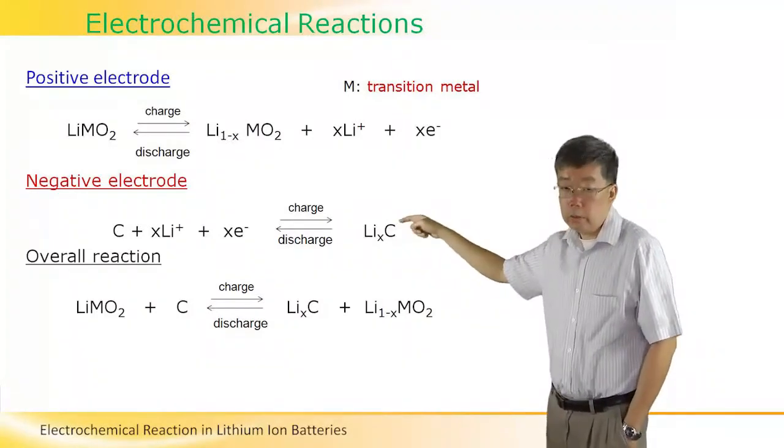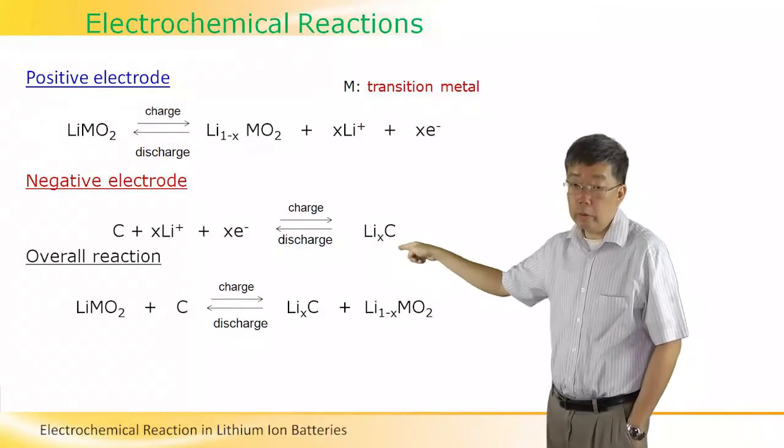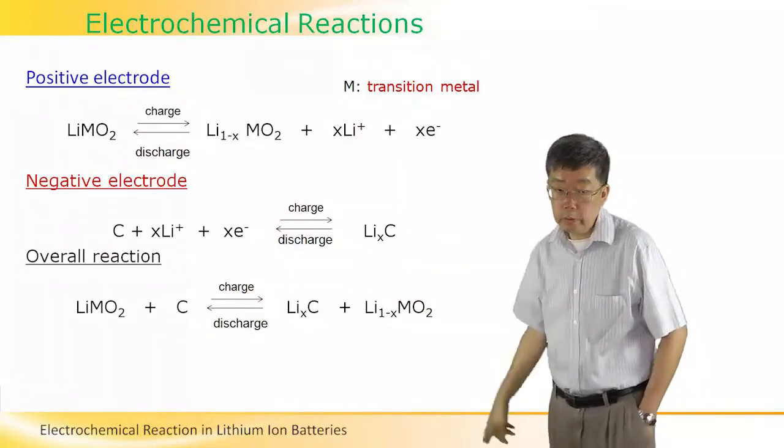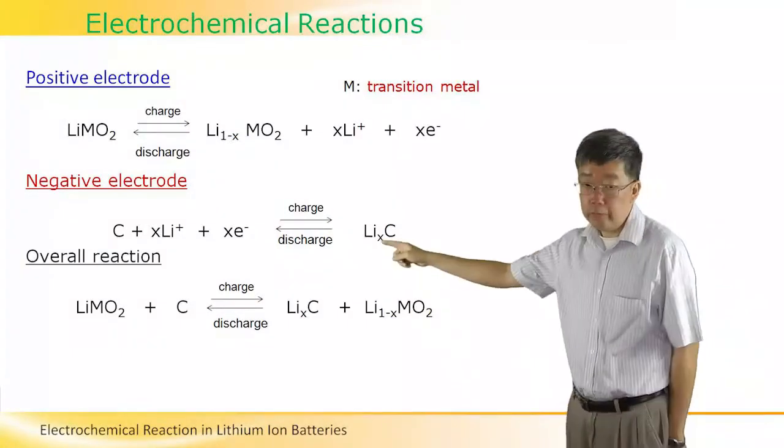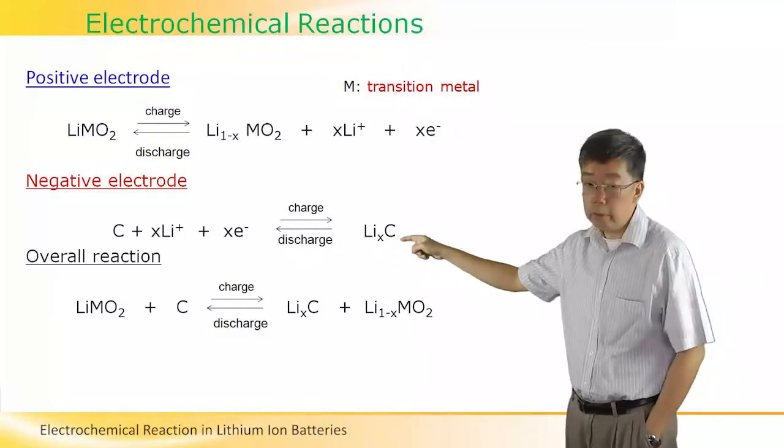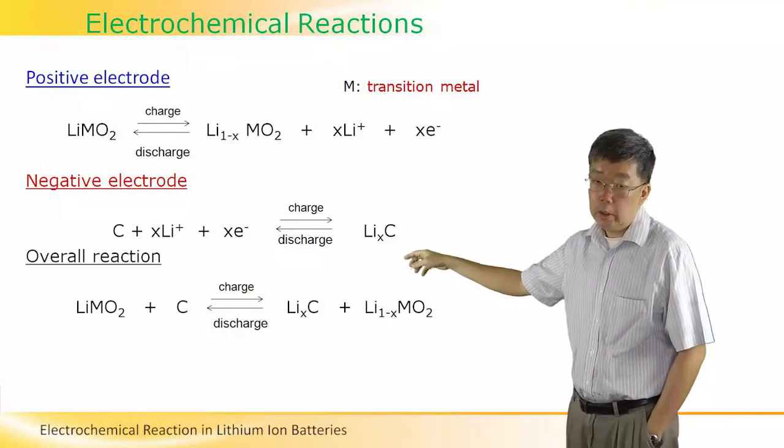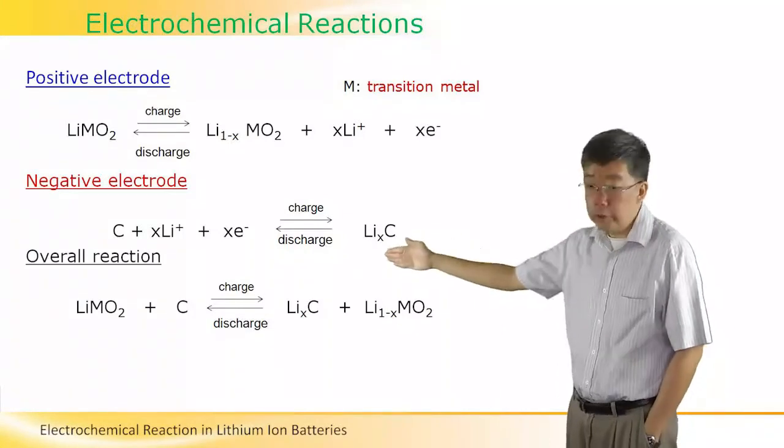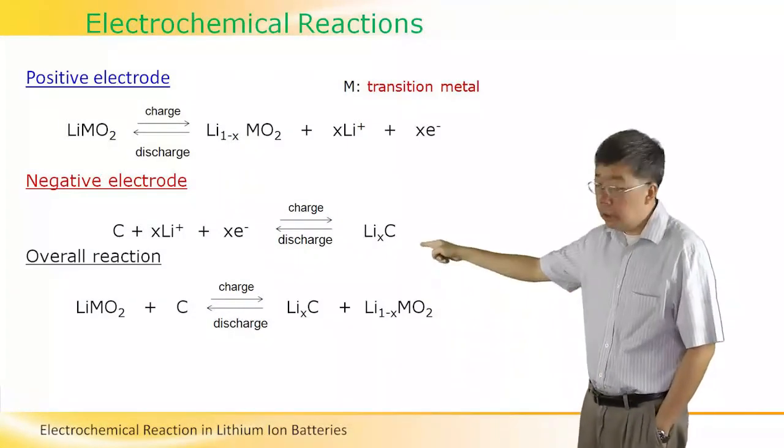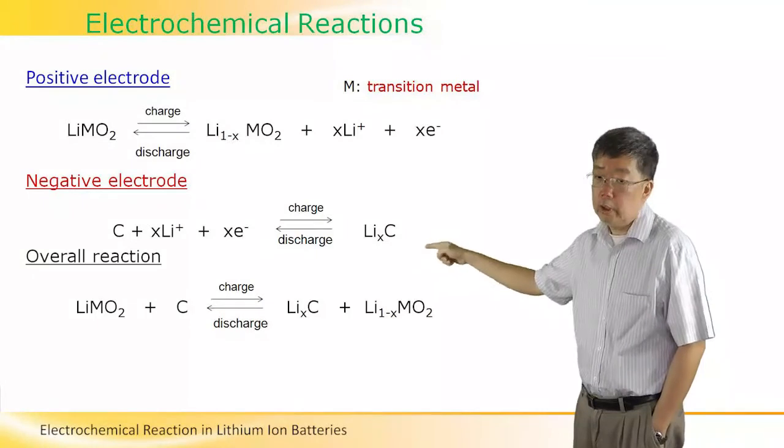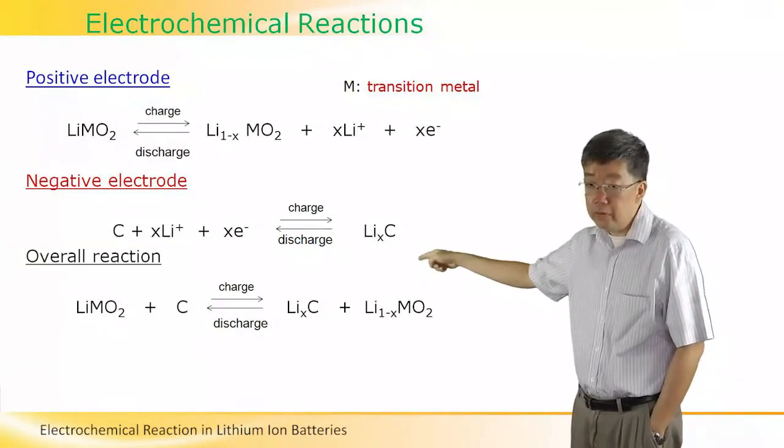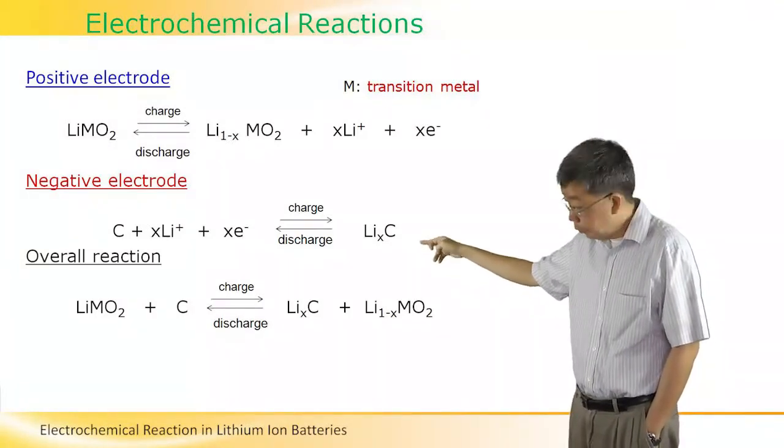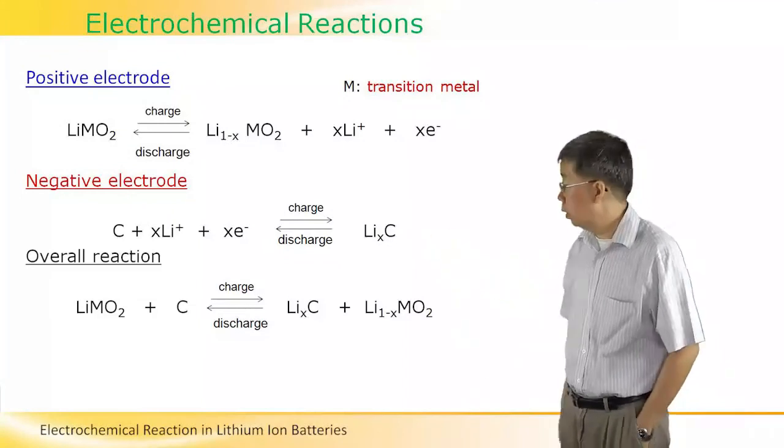You can see that we have LiMO2 and graphite, and they can be turned reversibly into lithiated graphite and the lithiated transition metal oxide.